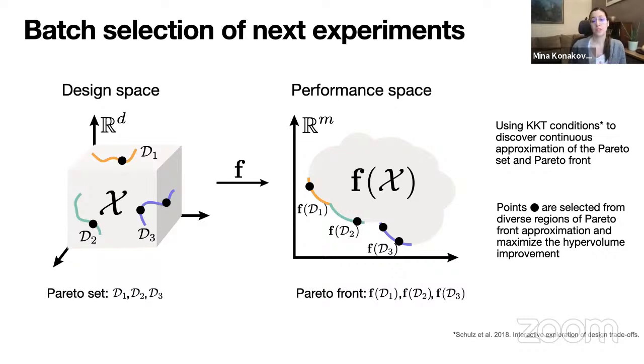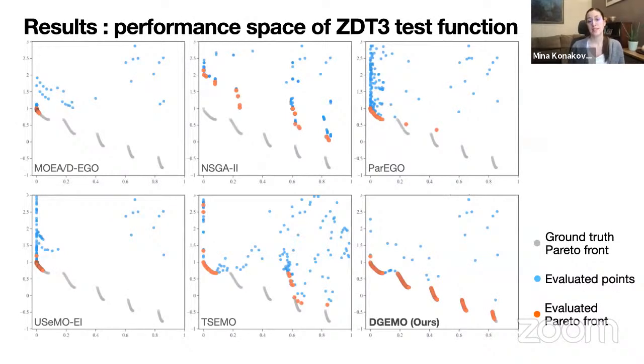And then a key insight for our selection strategy is that these solutions are often grouped in disconnected regions. So we define a diversity metric to encourage sampling from various regions of the space while also trying to maximize the hyper-volume improvement. The hyper-volume improvement is a standard quality measure of the obtained Pareto front. But in contrast to previous works, our diversity metric takes the knowledge from both the design and the performance space to better select the batch of next experiments. And to illustrate the advantage of our solver and selection strategy, here we show a performance-based comparison of a standard test function against other popular and state-of-the-art methods. And you can see that thanks to our selection and solver strategy, we are able to quickly reach the ground truth Pareto front and don't get stuck in local minima, much more efficiently than other methods.